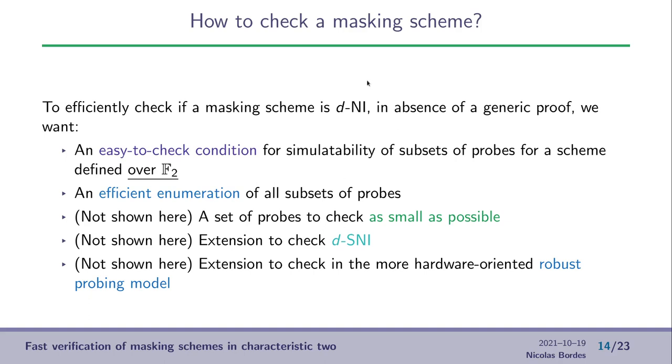And for this to be efficient, we want the set of probes to be as small as possible, to mitigate the exponential growth of the number of sets of probes. Also, here, I will talk about d-NI, but we also want to check the d-SNI property. And we can think of extending the verification in a more hardware-oriented model, called the robust probing model, but we will not show this here, but it is written in our article.